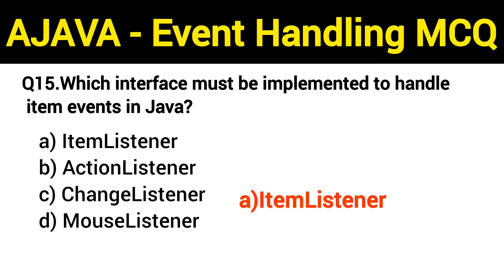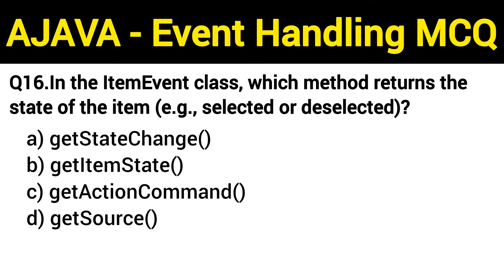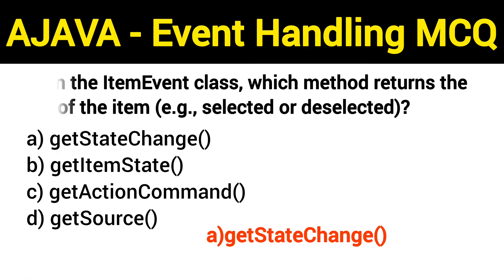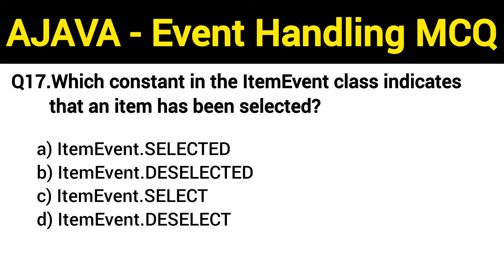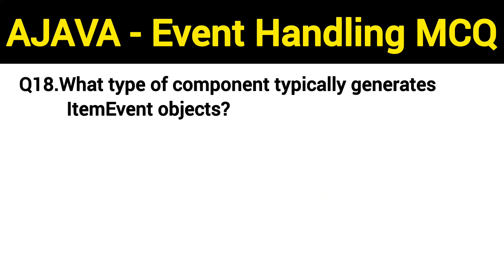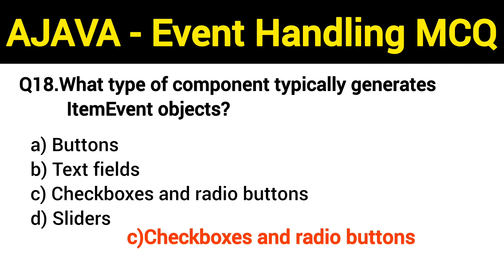Question number 16: in the ItemEvent class, which method returns the state of the item? The right answer is option A: getStateChange. Question number 17: which constant in the ItemEvent class indicates that an item has been selected? The right answer is option A: ItemEvent.SELECTED. Question number 18: what type of component typically generates ItemEvent objects? The right answer is option C: checkboxes and radio buttons.